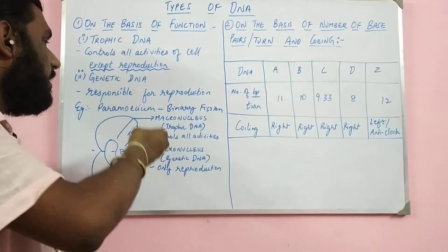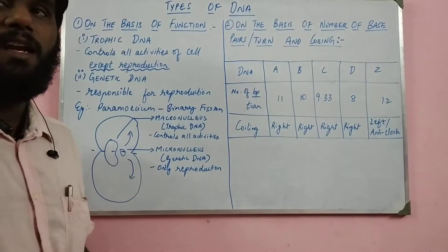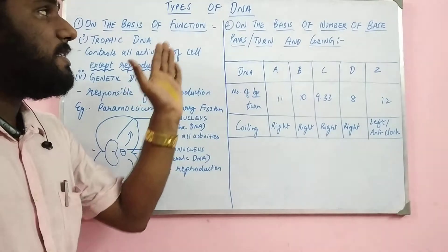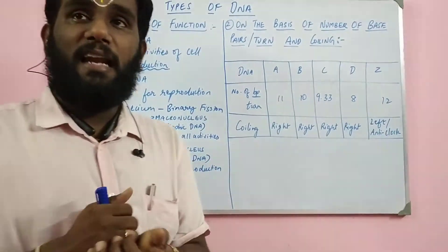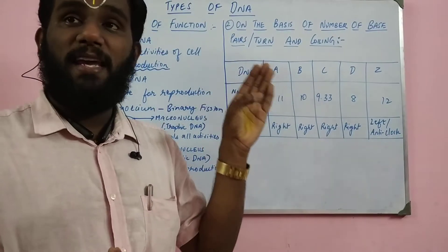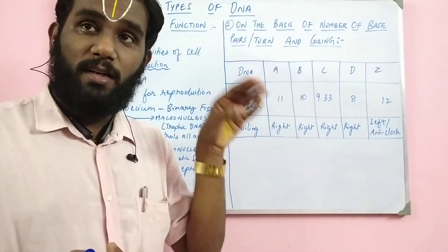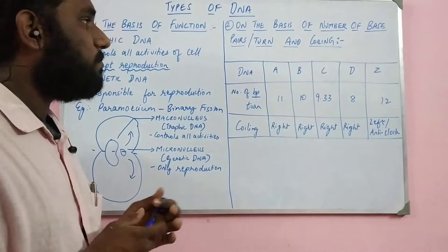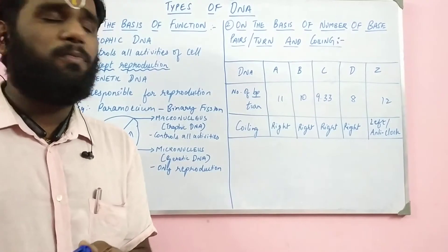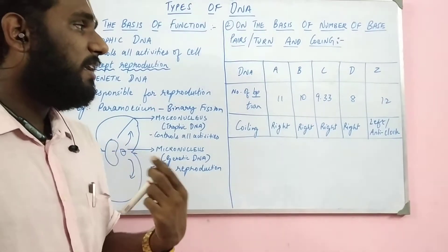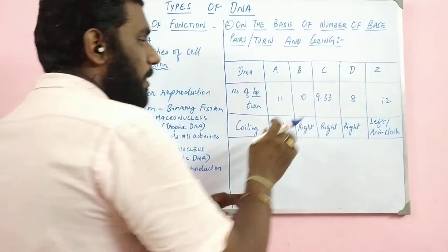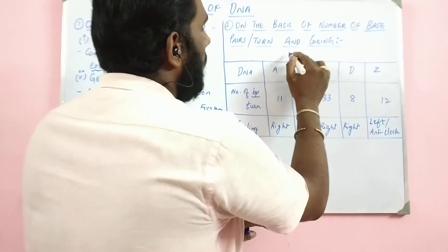This is how the trophic DNA and the genetic DNA function. Now let us go into the second way in which DNA is classified — on the basis of the number of base pairs per turn and coiling. There are many different models of DNA. What we commonly see is B-DNA — the Watson and Crick model of DNA is a B-DNA.